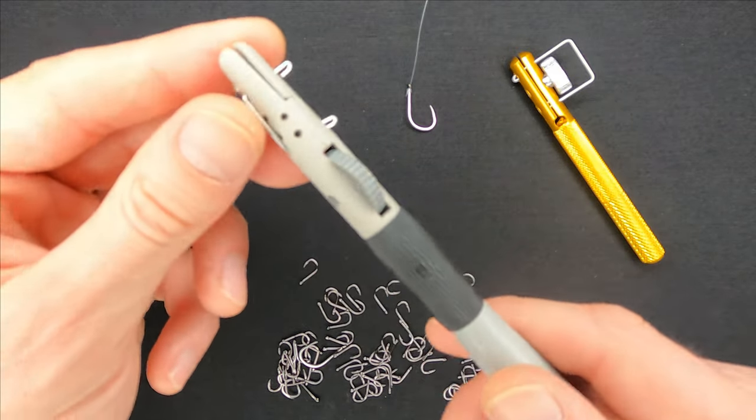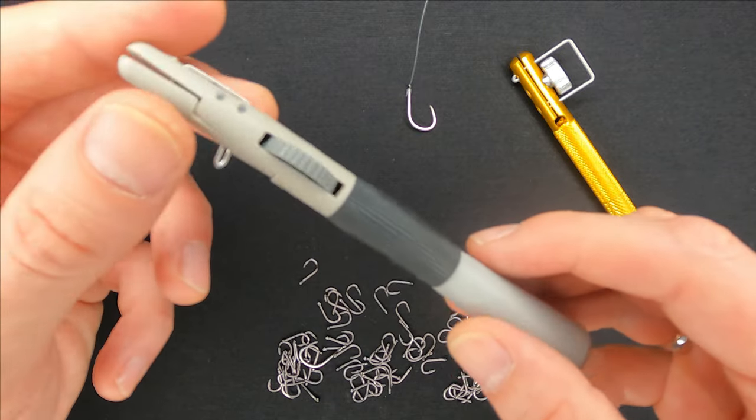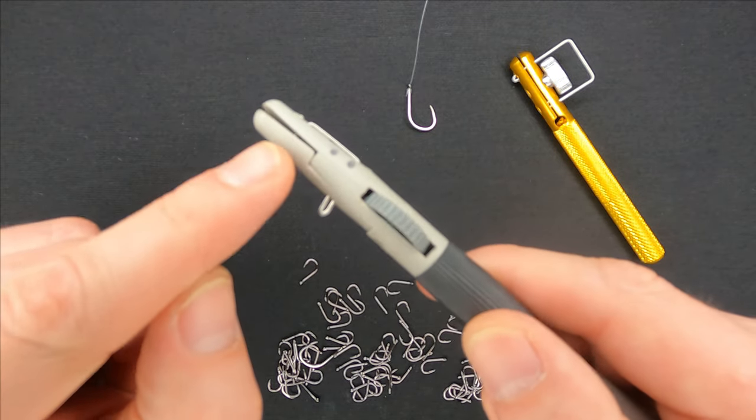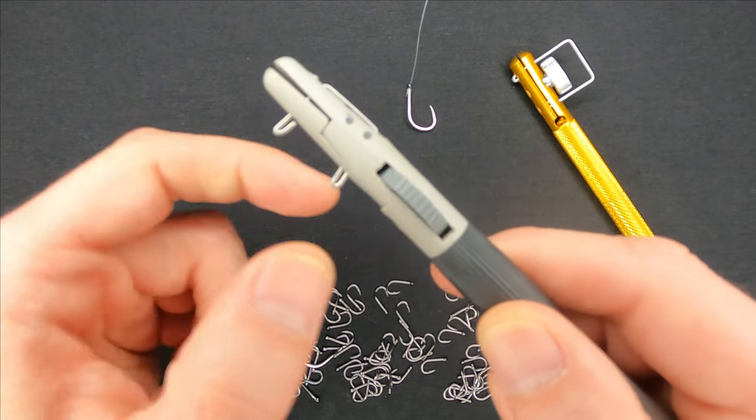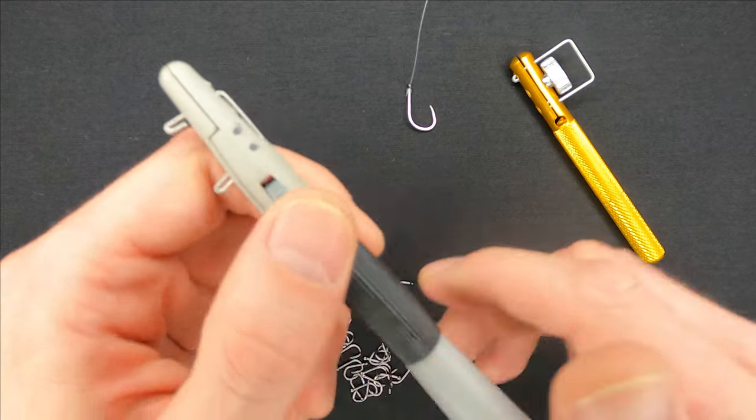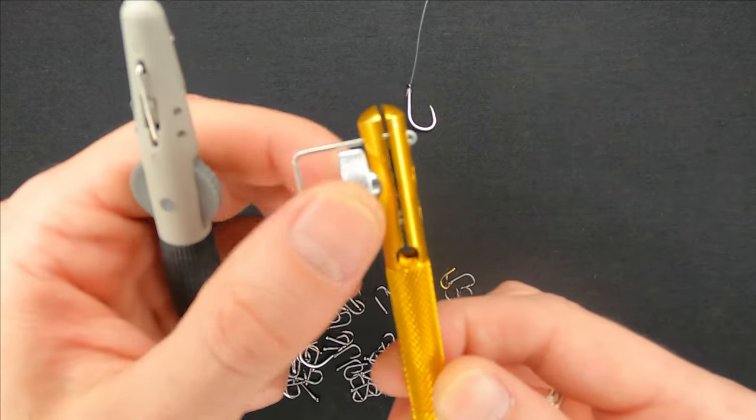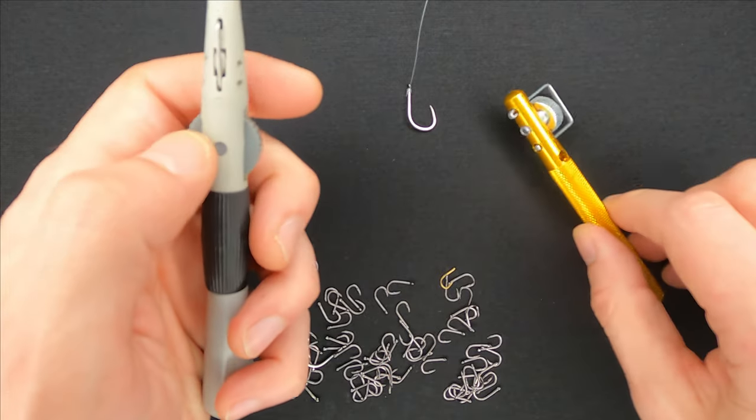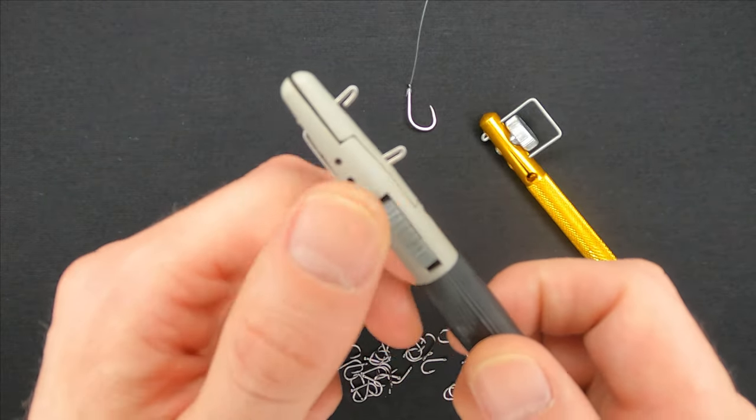One thing that was driving me crazy all the time when I was tying hooks with it are the jaws. On the aluminum one the jaws hold the hook pretty tight, but on the plastic one the hook might get loose while you are spinning it.